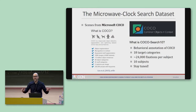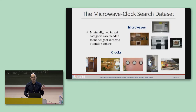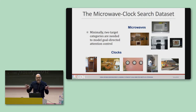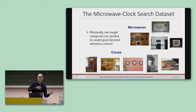In building this dataset, we have to start somewhere — and our first two categories were microwaves and clocks. The selection was largely arbitrary. More important is that two is the critical number you need to start modeling some basic questions in attention control, such as how attention changes when you're searching for one thing versus another.